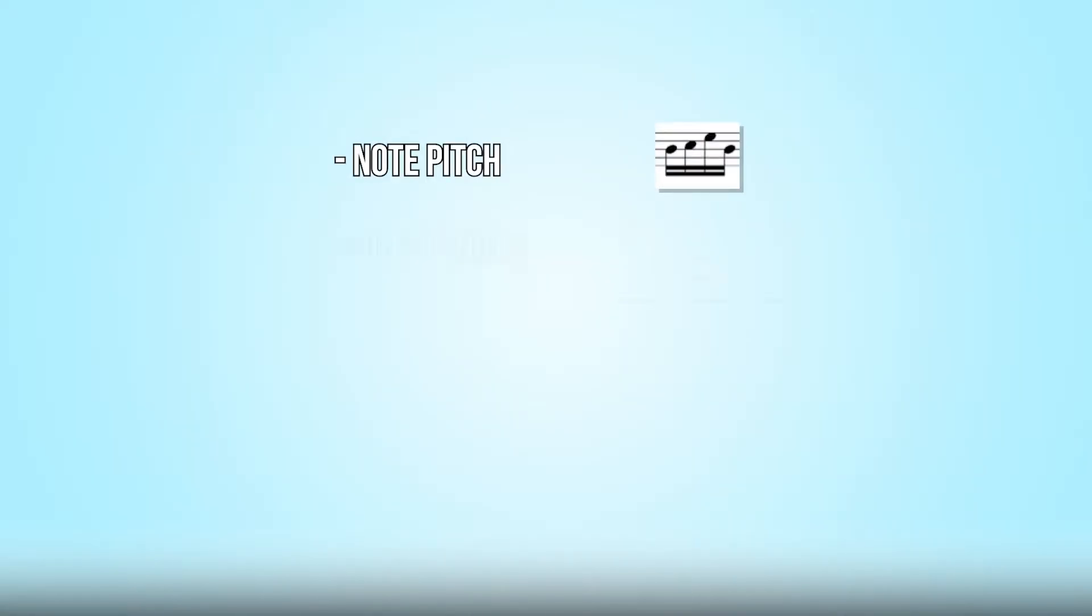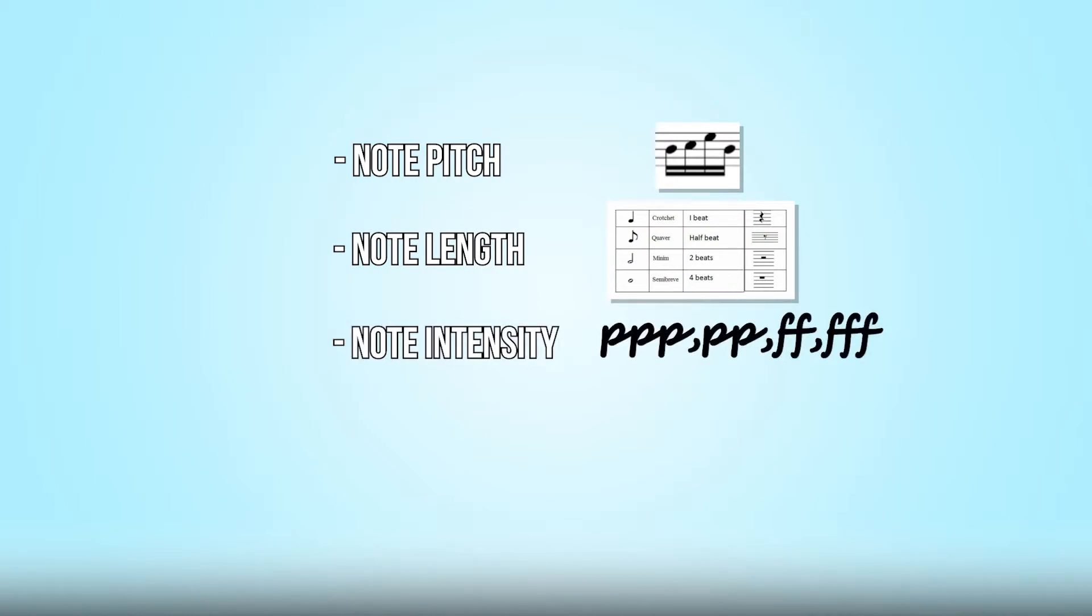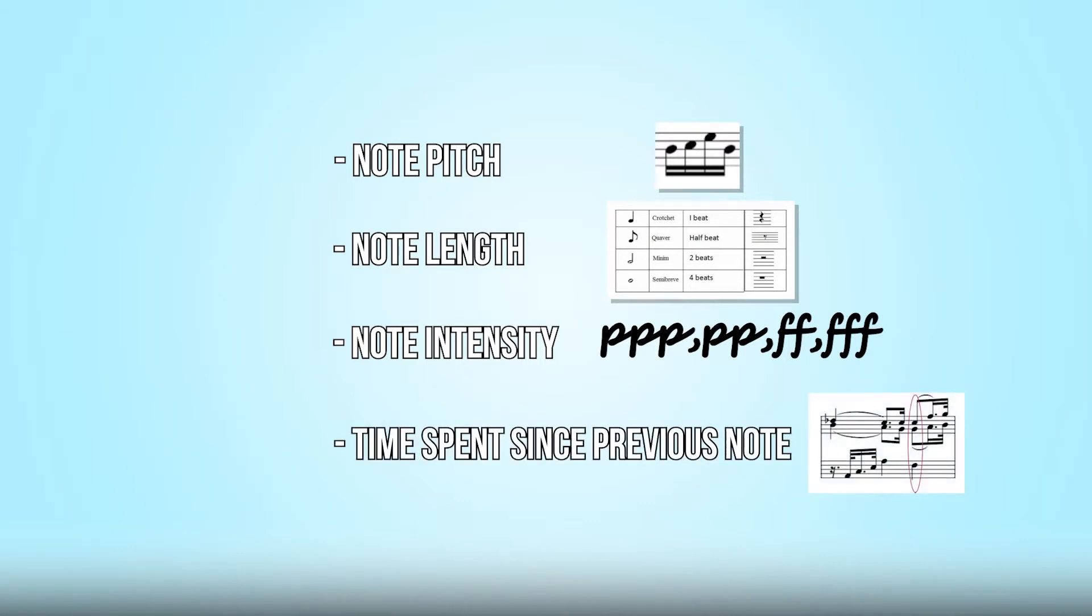Before we were only taking into account the pitch of the note. This time, we are taking into account four features per note. The pitch of a note, the note length, so the time between the note on and note off event, the intensity of a note or volume, and the time spent since previous note. For example, if this value is zero, then this note is occurring at the same time as the previous note, essentially taking into account polyphony.